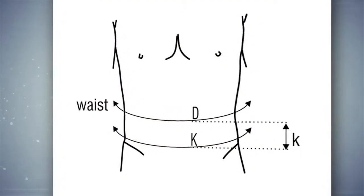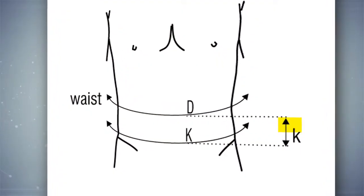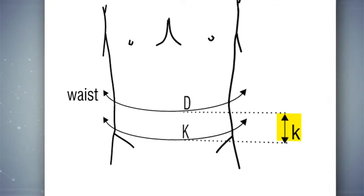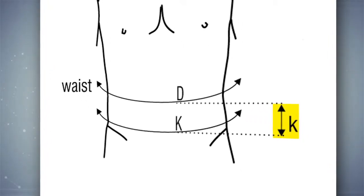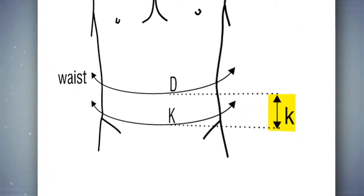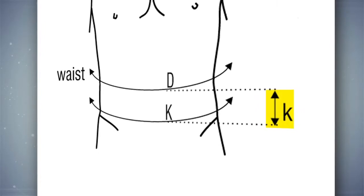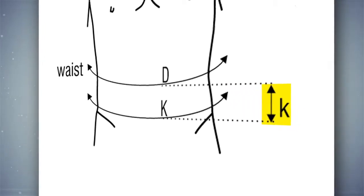The little K measurement is an optional measurement — the distance from the capital D circumference measurement, or circumference at the waist, down to the capital K circumference measurement, if the vest is extended below the waist.